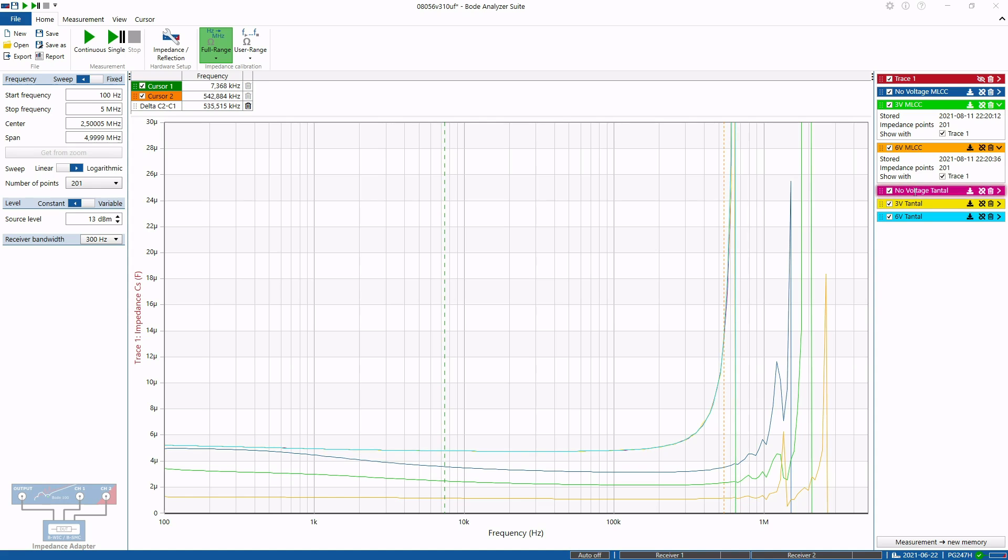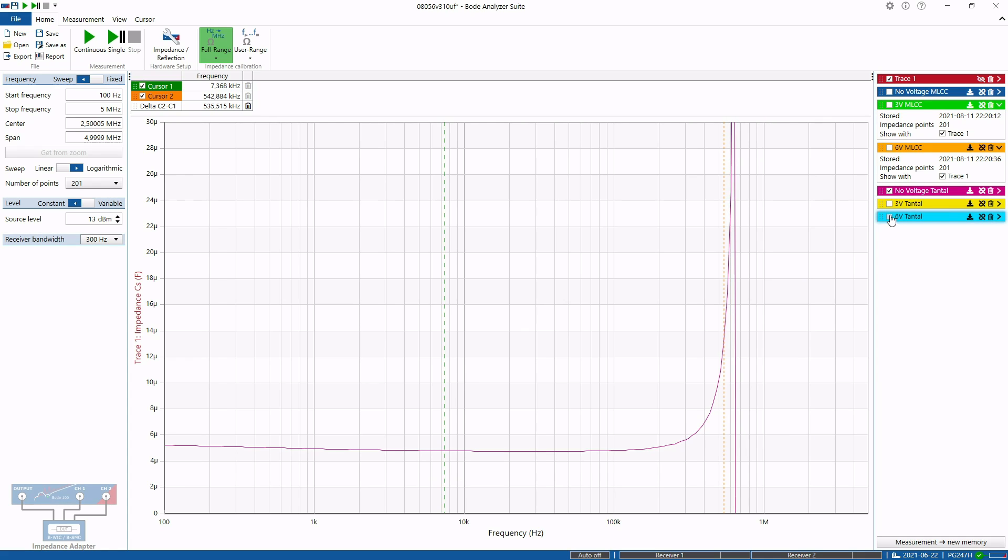As the next test, I also test it with a tantalum capacitor. And you see here, I'm now hiding the MLCC traces, and now I've only got the tantalum traces. And you see that the no voltage, the 3 voltage, and the 6 voltage capacitance curves are almost completely exact above one another. Whereas if we compare here with the MLCC, we see that the MLCC has significantly lost capacity as we increased the bias voltage of the thing.